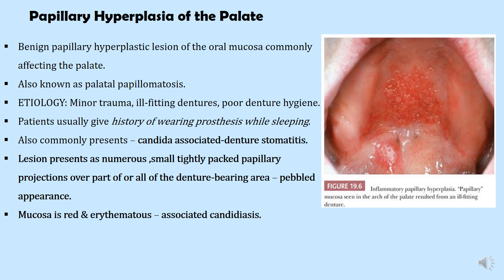Papillary hyperplasia of the palate presents on the hard palate, usually in middle-aged to elderly female patients, almost invariably under an ill-fitting upper denture. The exact etiology is unknown but chronic trauma from a rocking denture is thought to predispose to these lesions. Patients usually give a history of wearing the prosthesis while sleeping. Clinically there are multiple pinpoint projections on the anterior hard palate, as seen in this clinical picture. This hyperplastic lesion is frequently associated with candidal overgrowth.